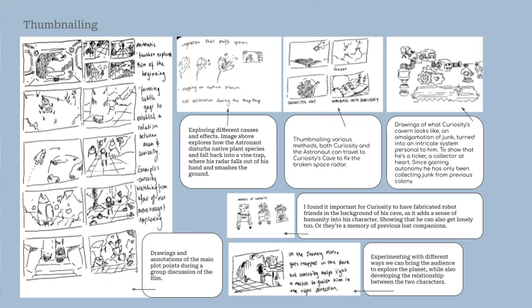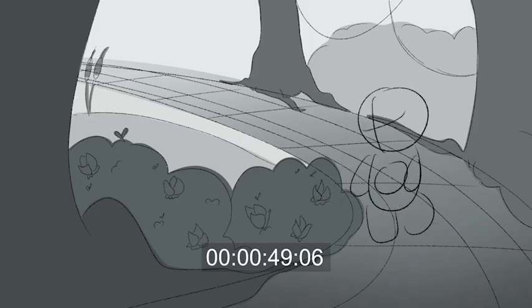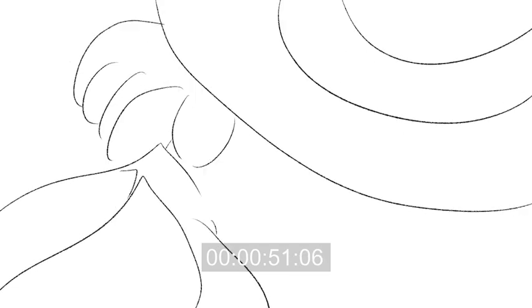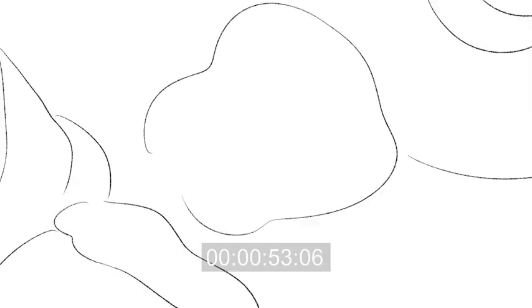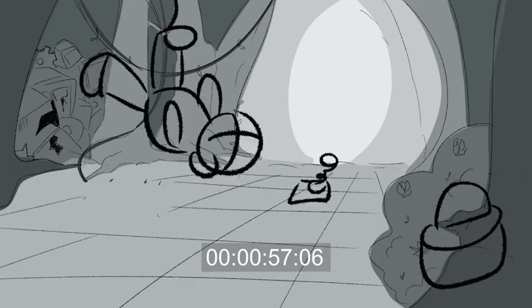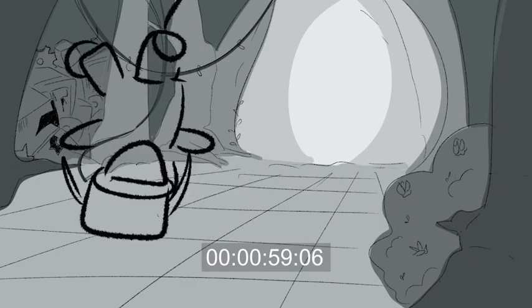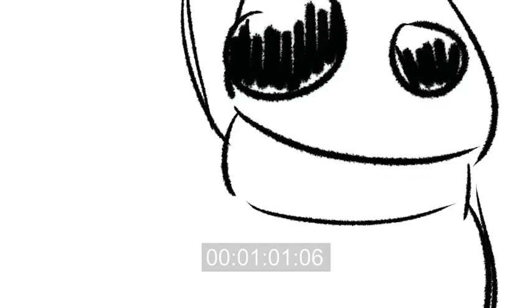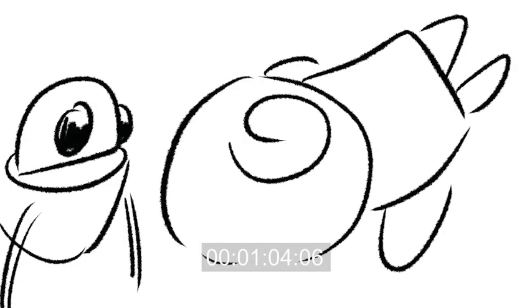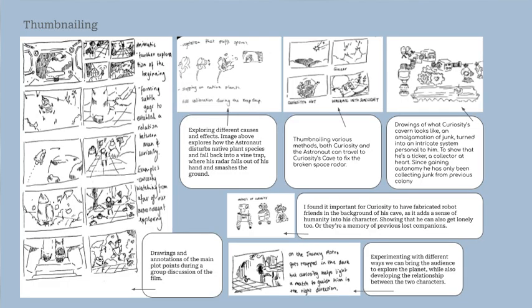To establish the astronaut's character, I wanted to emphasise his carelessness through his interactions with the environment. The effect of him disturbing native plant species leads him to fall into a vine trap, where he then smashes his radar. It leaves an open door for us to introduce Curiosity as a helpful and kind-hearted character, without having been detected by his radar. It creates a butterfly effect where the audience could follow along easily.